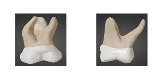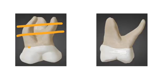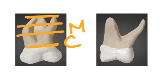As we know, the root division is the same in case of anterior and posterior tooth. The roots are horizontally divided from the cervical line to the apex of the root, and the thirds are the cervical third, the middle third, and the apical third.